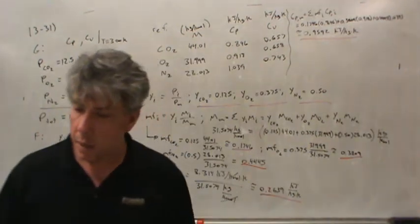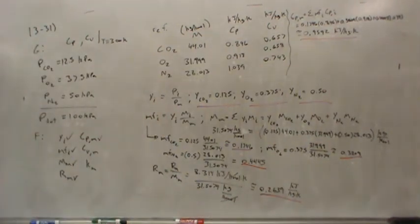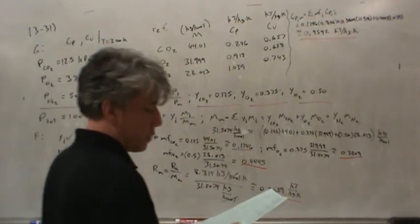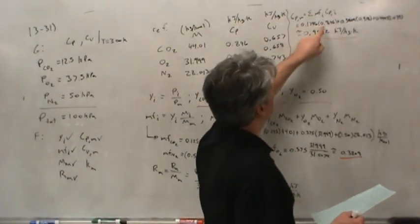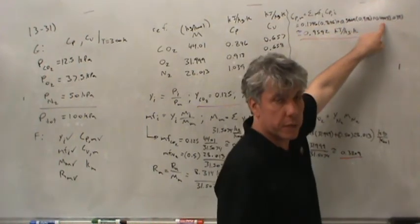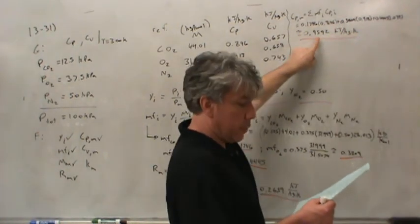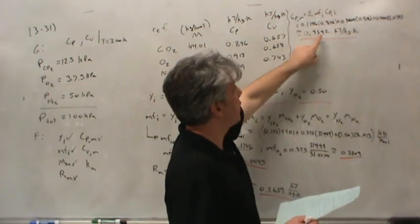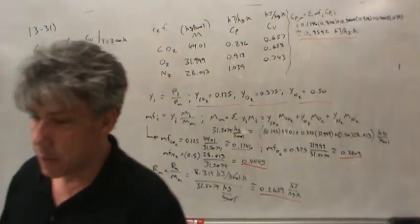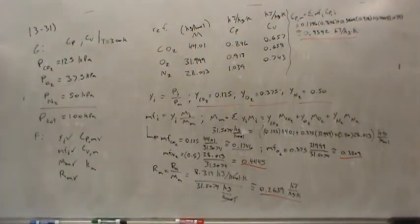This number is close to my earlier rough calculation of 0.9695 — where I incorrectly used molar fractions instead of mass fractions. The results are close numerically, which confirms I haven't made a calculator error.